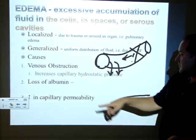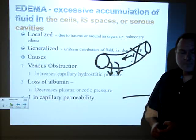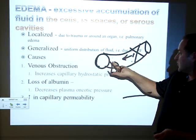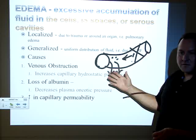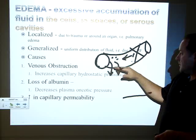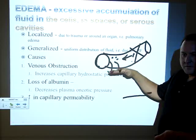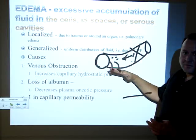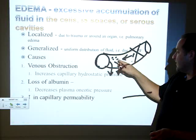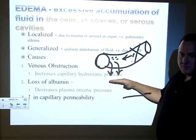Another cause of edema is loss of albumin. Albumin is your major protein in your blood. If you have these proteins in your blood and you lose some of them, you're going to lose water too — because with osmosis, water chases stuff. Proteins are big 'stuffs.' So if you have fewer proteins in the blood, less water is attracted to them and the water ends up out in the tissues where you don't want it.